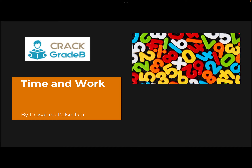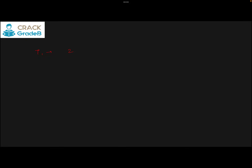I divide the questions into two types. Type one questions take the form: two men do two works in two days, so one man will do one work in how many days? Under type two, we observe an entirely different type: A does a work in say 8 days, and there is another person B who does the same work in say 24 days. If together they do the work, in how many days will the work get complete?